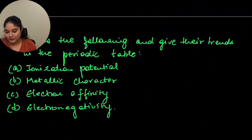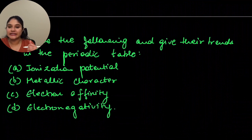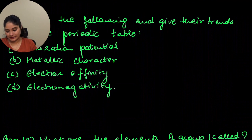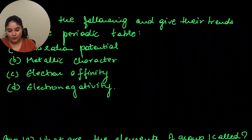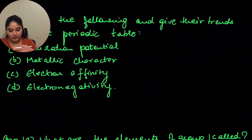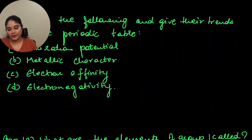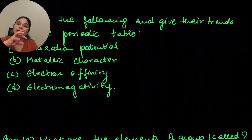Electron affinity: going down a group, electron affinity decreases; going across a period, it increases. Electronegativity — the tendency of an atom to attract electrons towards its side when combined in a compound: it decreases as we move down the group and increases as we move from left to right in the periodic table. You can also write it as the tendency to pull the shared pair of electrons towards itself.